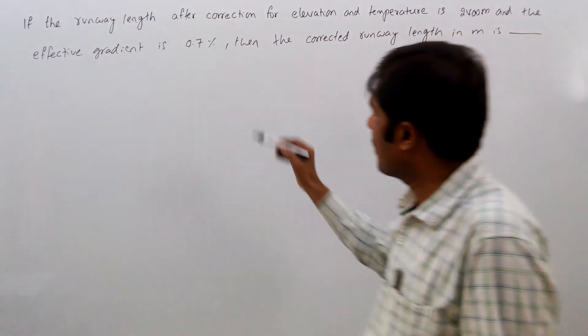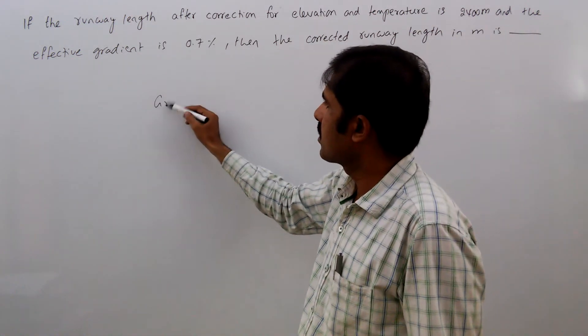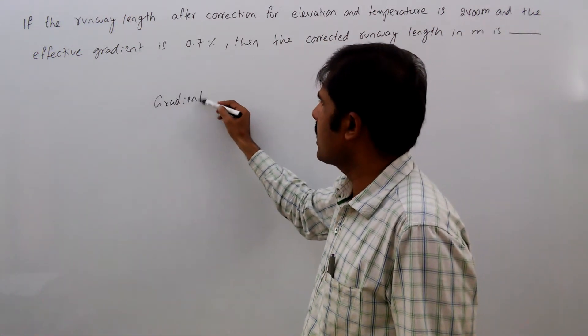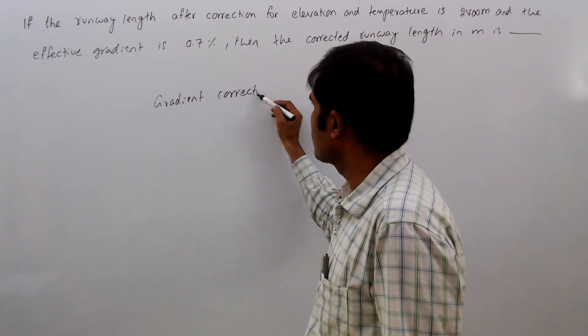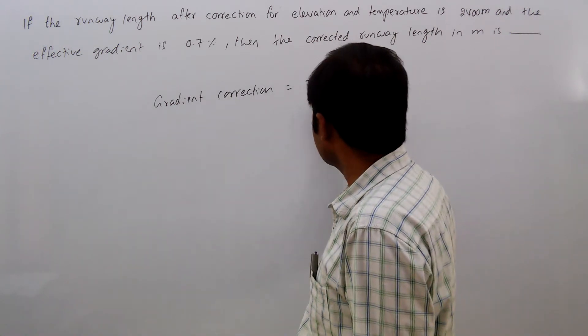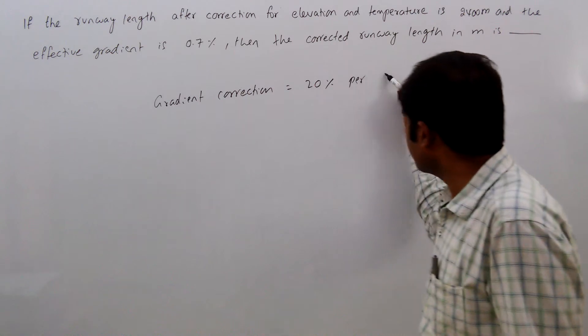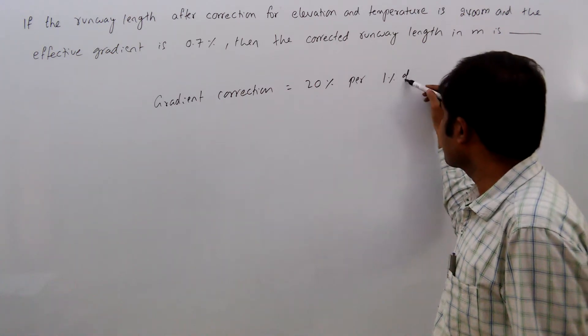Here, we know gradient correction equals 20 percent per 1 percent of effective gradient.